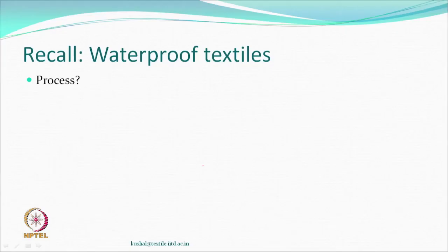Let us recall how we produced a waterproof textile. The procedure mainly was that you wanted to close the interstices of a fabric. This is normally done by coating a polymer layer or you can laminate also. You close everything so that nothing can penetrate and so resistance to penetration of water is increased.